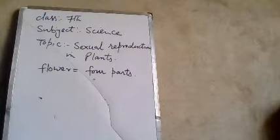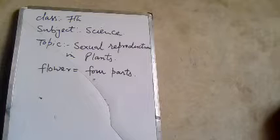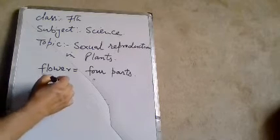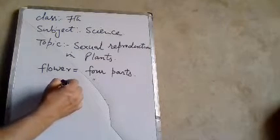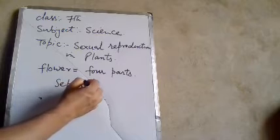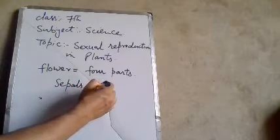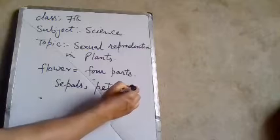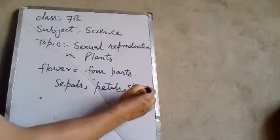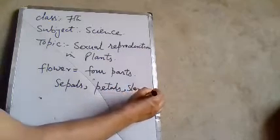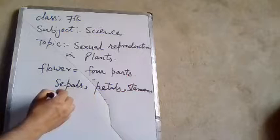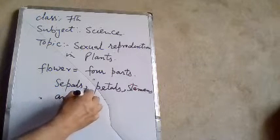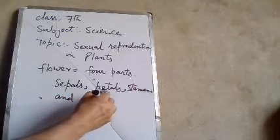These four parts, in order from the outside, are: sepals, petals, stamens, and pistil.